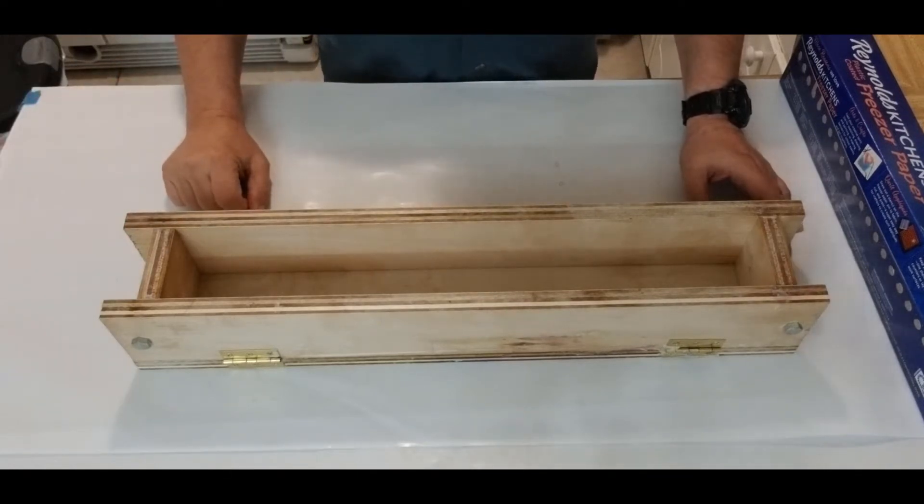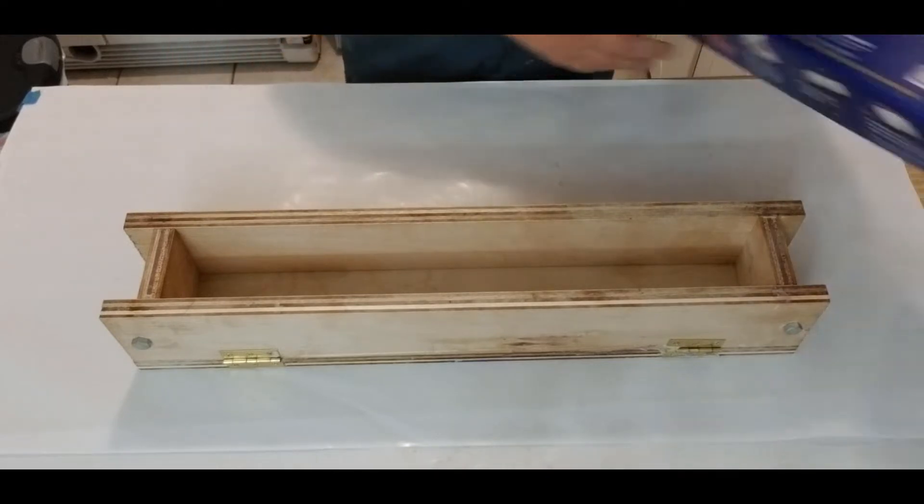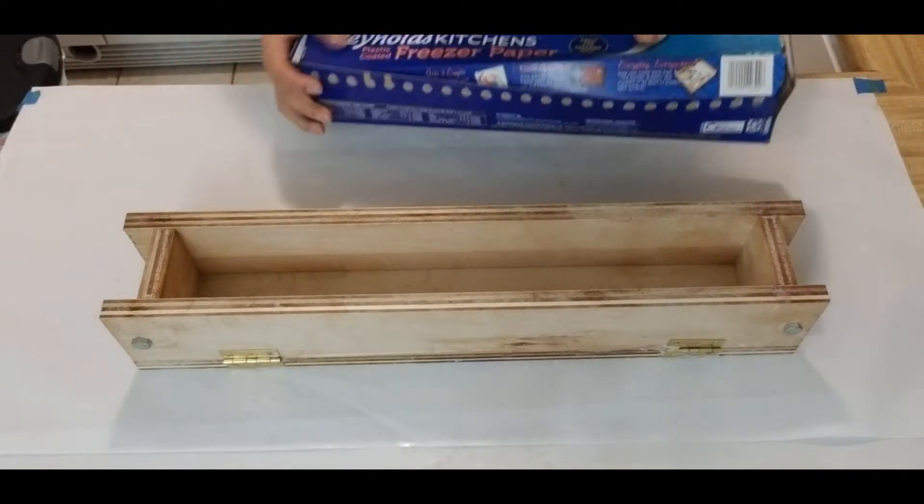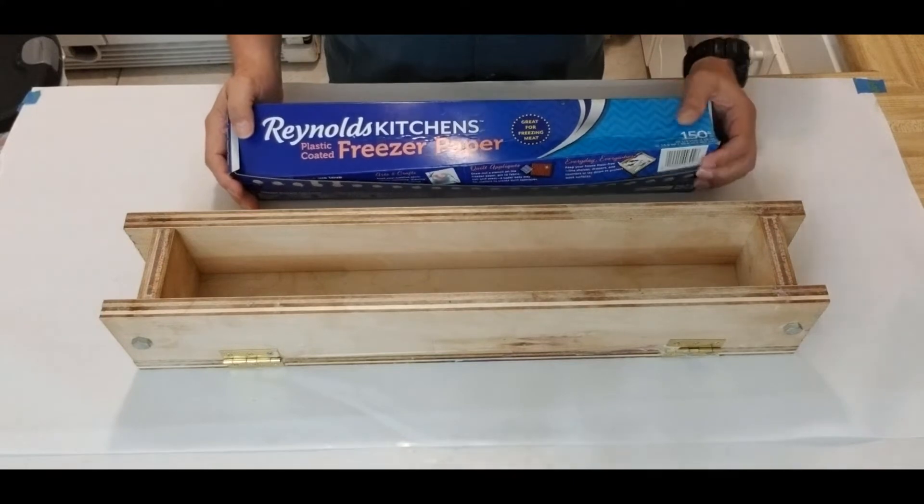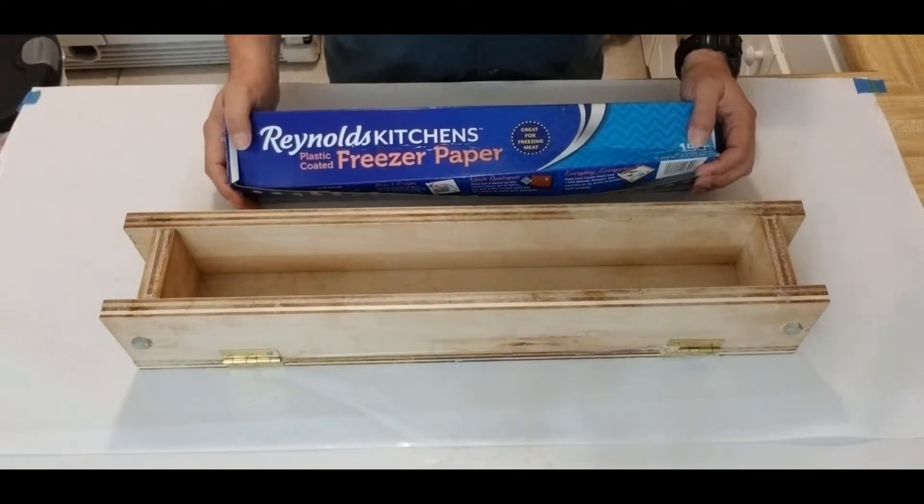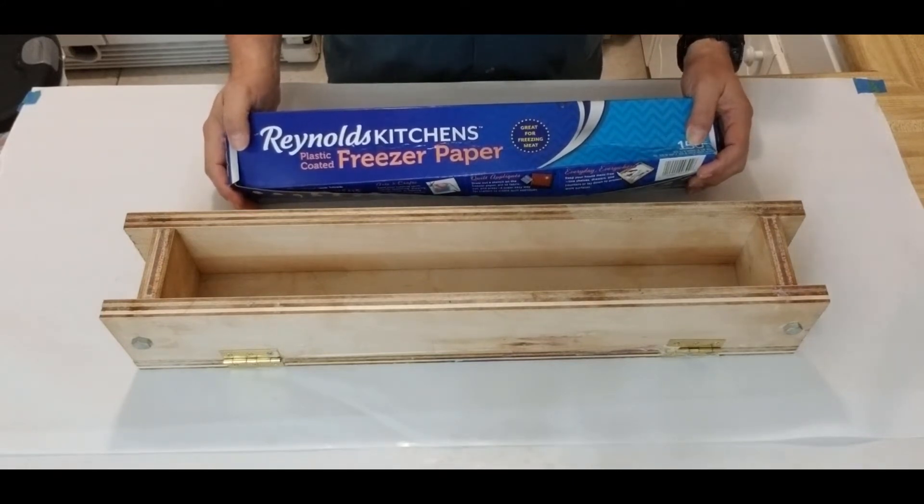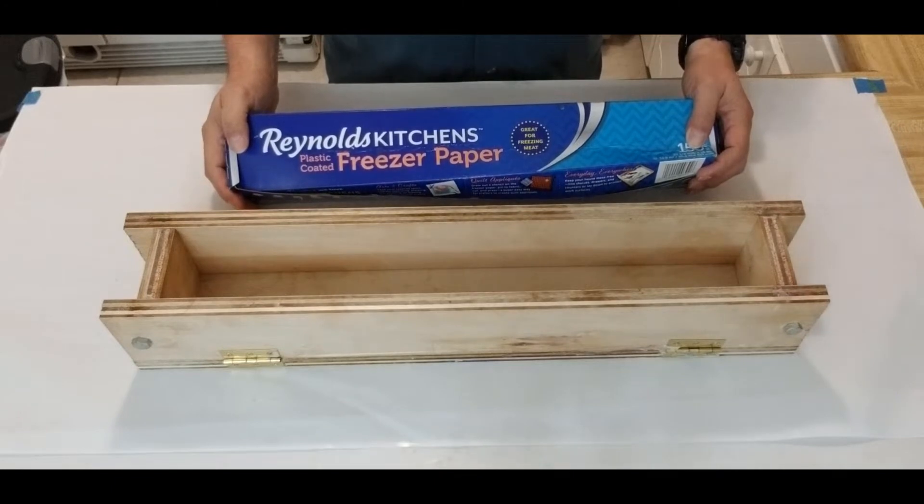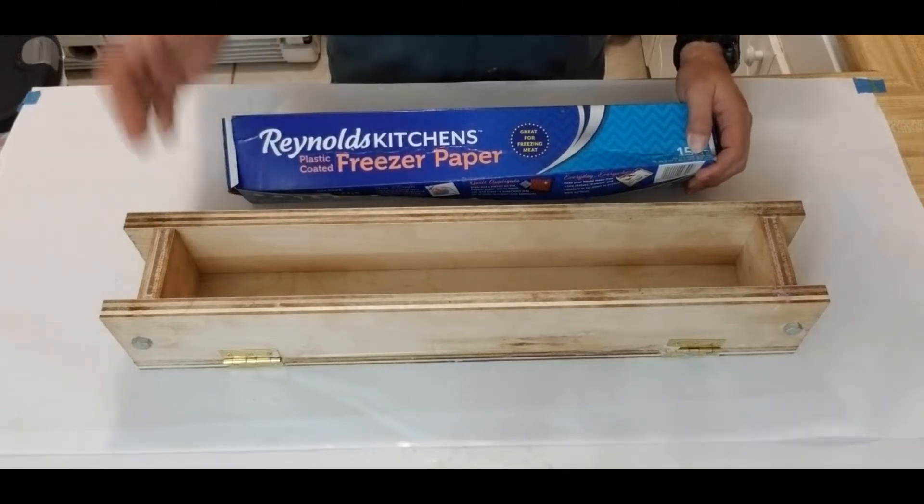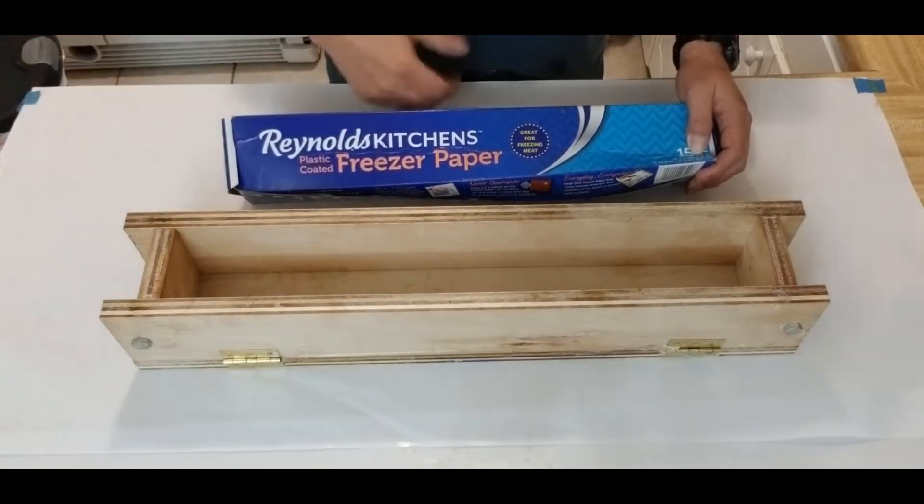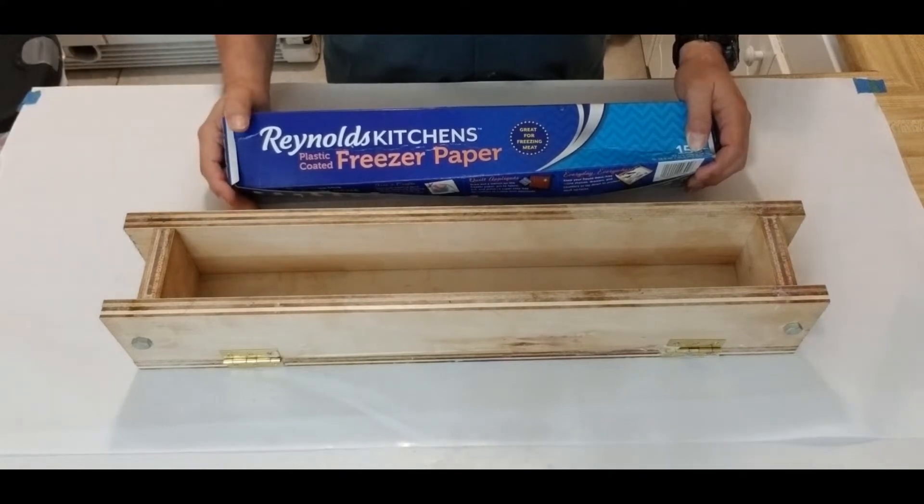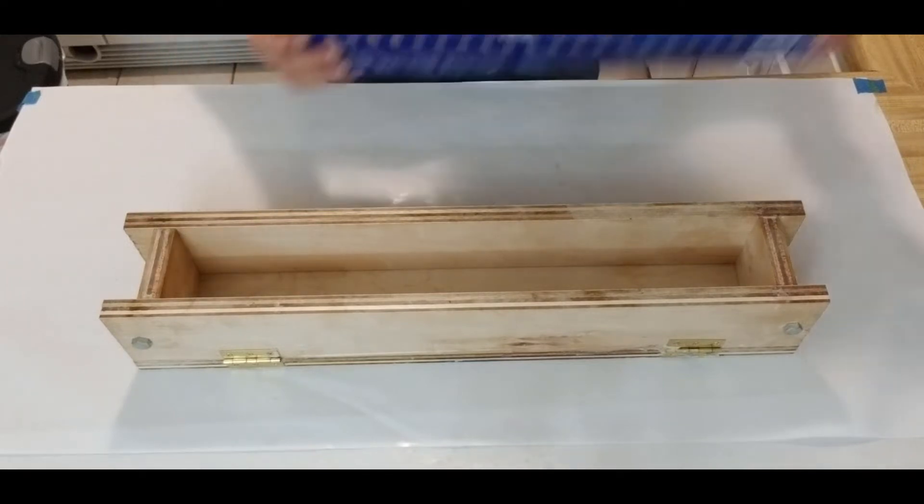We're going to be using this freezer paper. You can buy this at Walmart or wherever. A large roll lasts a pretty good amount of time. The freezer paper is not reusable. Once you pour the soap in it and you peel it off the soap, well you've seen my other video. But again, I thought I'd show you exactly what it is that I do to line my molds.